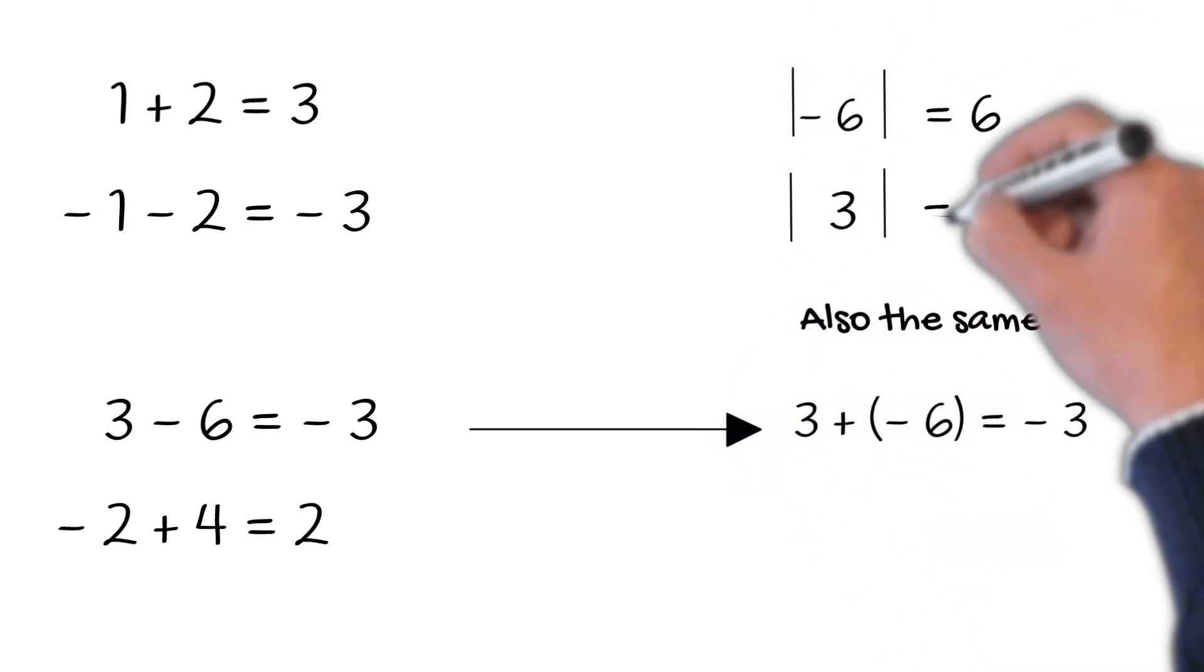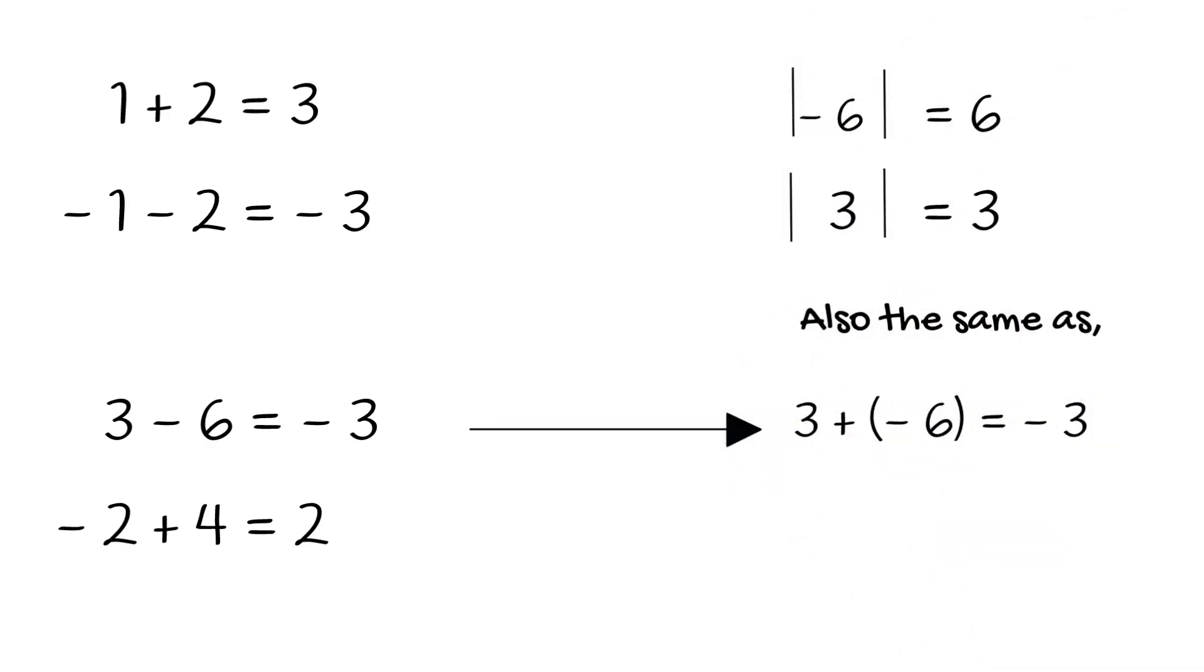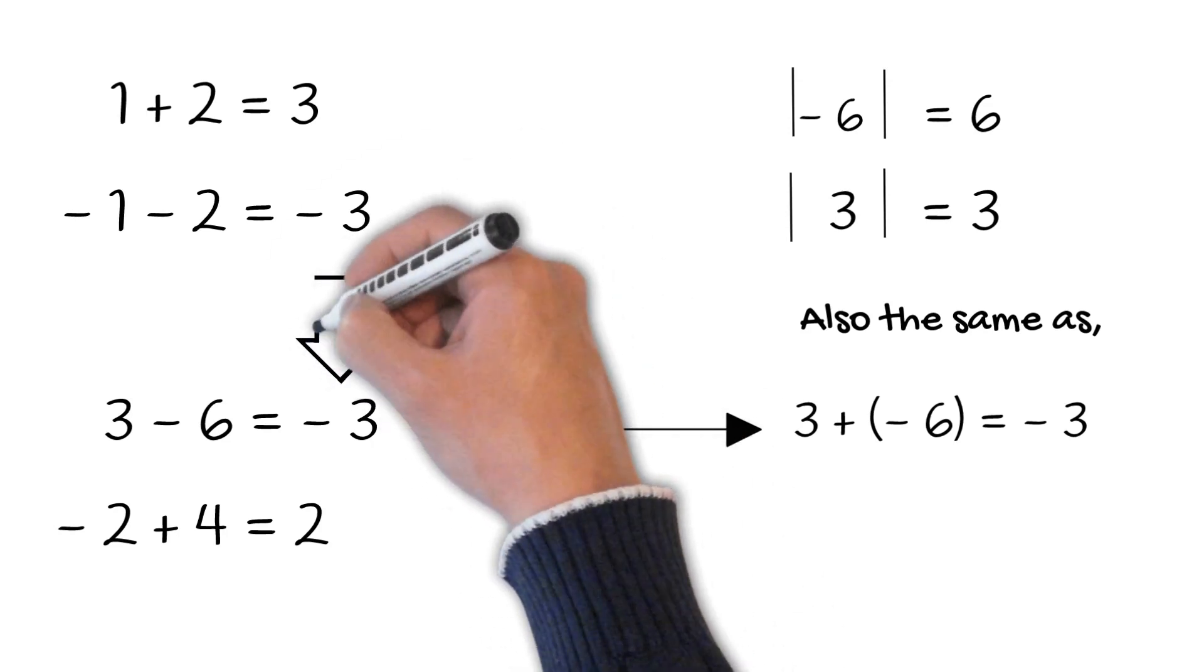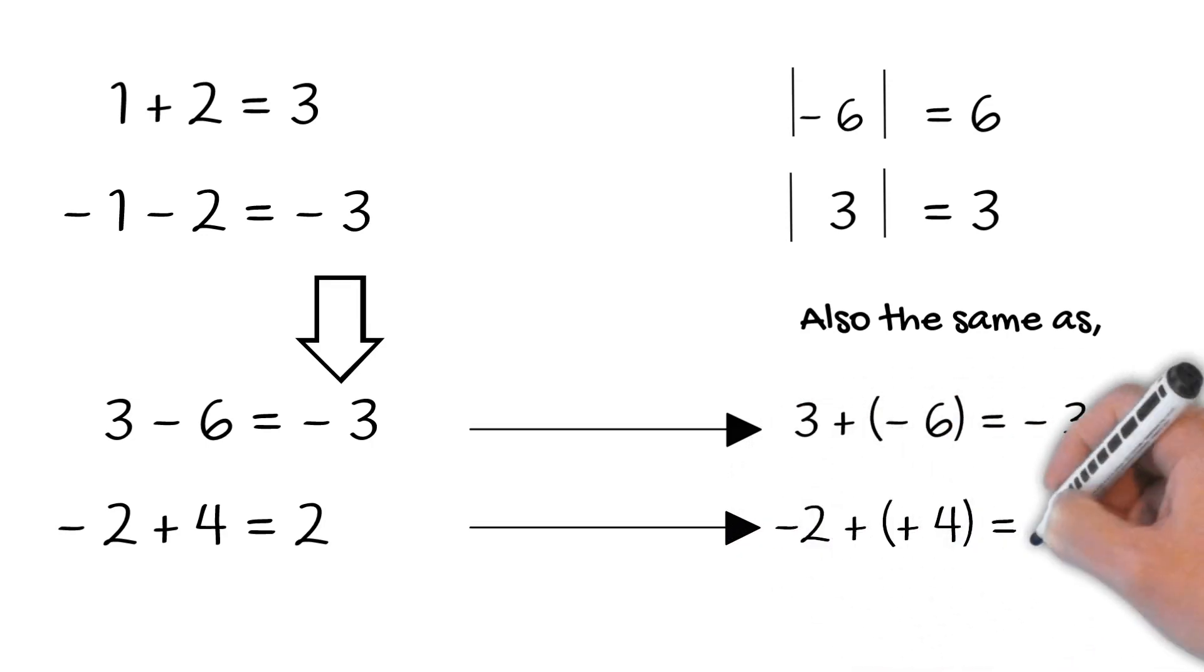So for 3 - 6, we keep the sign of 6 since it has the larger absolute value than 3, hence our answer is -3. For -2 + 4, we keep the sign of 4 since it has a larger absolute value than 2, so the answer is 2.